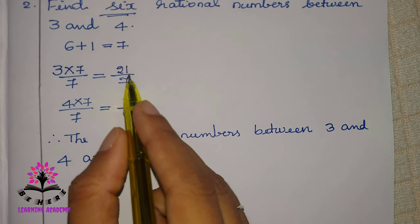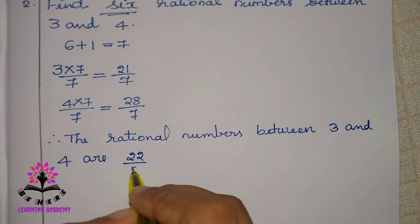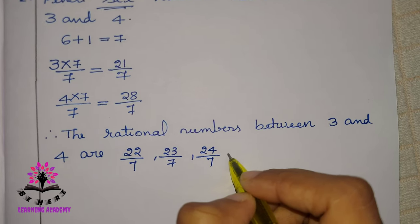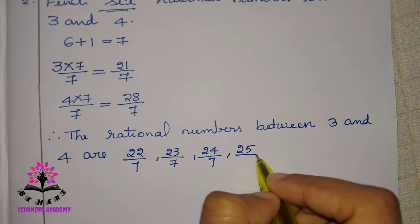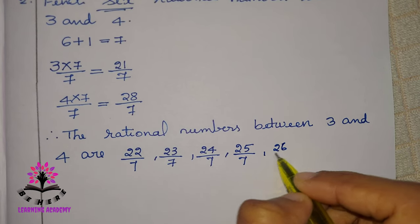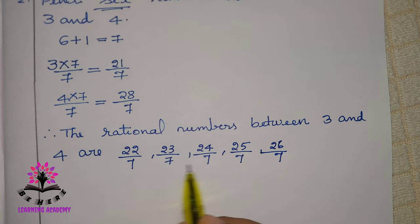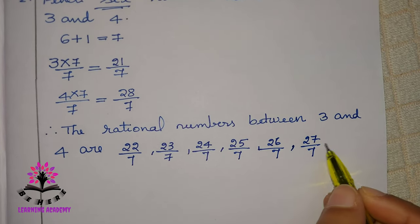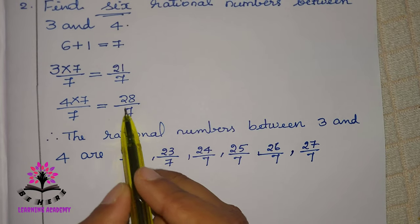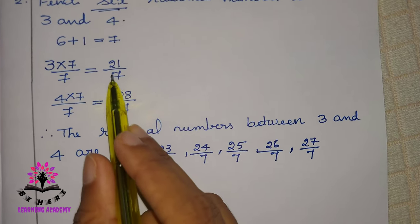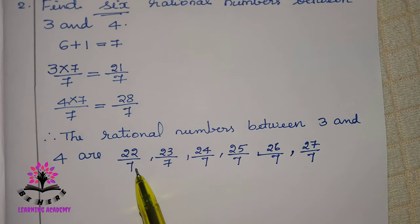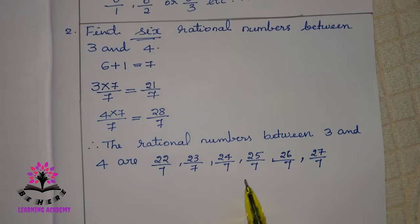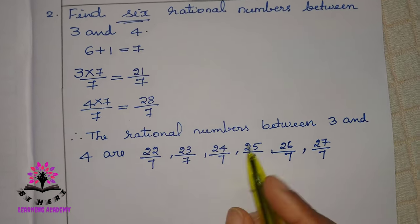After 21 by 7, the next number will be 22 by 7, then 23 by 7, 24 by 7, 25 by 7, 26 by 7 — that's 5. The next number will be 27 by 7. The numbers between 21 by 7 and 28 by 7 give us 1, 2, 3, 4, 5, 6 rational numbers. These are the rational numbers that come between 3 and 4.